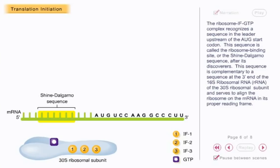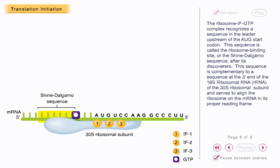This sequence is complementary to a sequence at the 3' end of the 16S ribosomal RNA of the 30S ribosomal subunit and serves to align the ribosome on the mRNA in its proper reading frame.